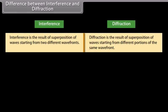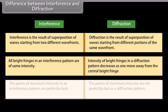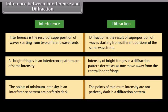Interference is the result of superposition of waves starting from two different wave fronts, whereas diffraction is the result of superposition of waves starting from different portions of the same wave front. All bright fringes in an interference pattern are of the same intensity, whereas intensity in a diffraction pattern decreases as one moves away from the central bright fringe. The points of minimum intensity in an interference pattern are perfectly dark, whereas in a diffraction pattern they are not perfectly dark.